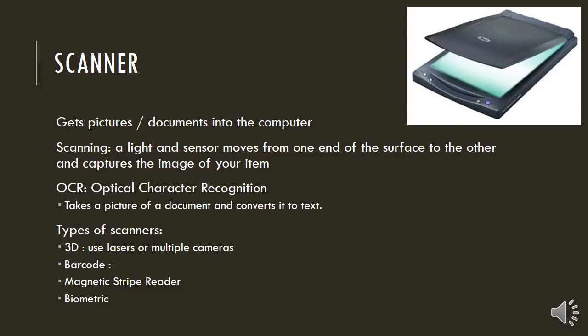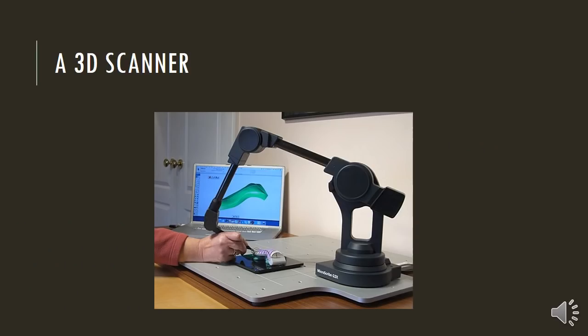There are different types of scanners. You get a 3D scanner that uses lasers or multiple cameras — you can take an object, put it in the 3D scanner, and it will create an exact map of that item so you could print it on a 3D printer and get the exact same item. You get barcode scanners used in libraries or at shops, and you get magnetic stripe readers and biometric scanners that read your iris or fingerprint, which are used a lot for security. Here is a picture of a 3D scanner with the object being scanned.